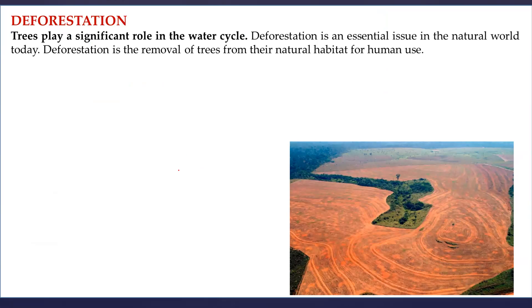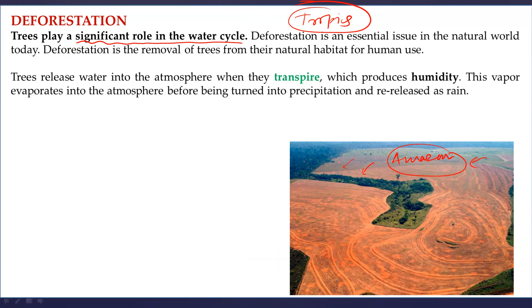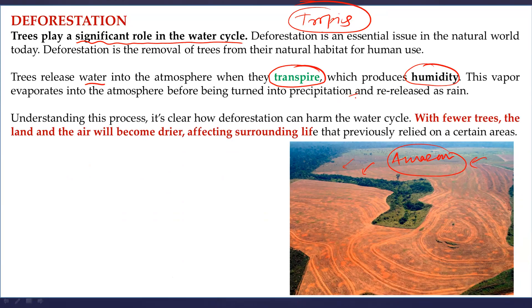Deforestation is a huge problem across the world — we are clearing patches after patches. The Amazon, often called the lungs of the planet, is now on peril. Trees play a significant role in the water cycle through transpiration, which produces humidity and in turn is related to precipitation. If you clear a patch of forest it impacts the entire ecosystem. With fewer trees, land and air become drier, leading to aridity, and more aridity leads to more desertification. Tropical countries, which are mostly underdeveloped and developing, need to develop, so they clear forests — which then impacts the entire world.